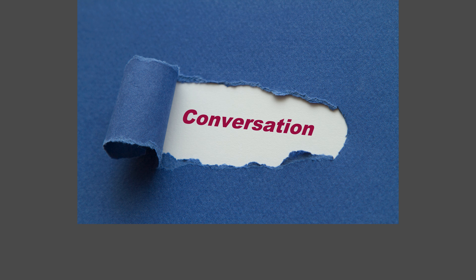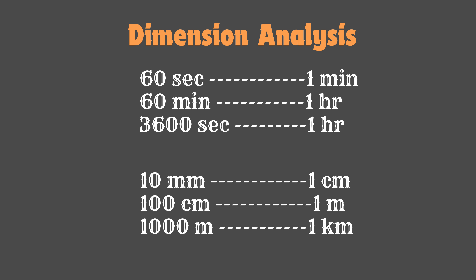Unit Analysis. Unit analysis, also known as dimensional analysis, is a method used to convert one unit of measurement to another. This technique ensures that equations and calculations are dimensionally consistent. For example, converting meters to centimeters or grams to kilograms involves multiplying by conversion factors that cancel out the original units, leaving the desired units.